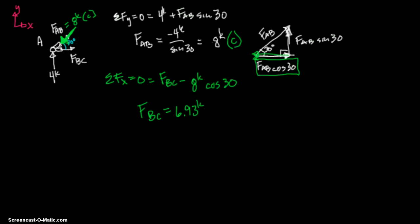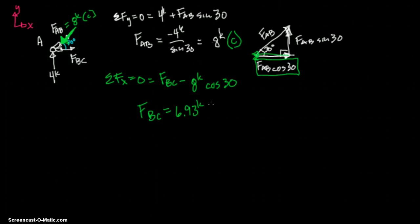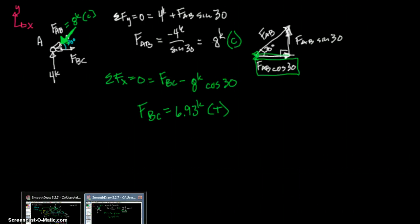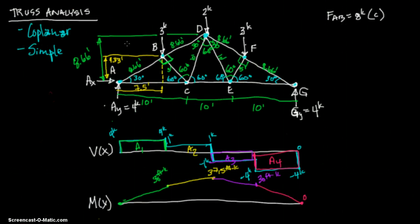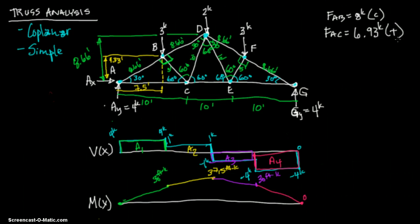And since that's positive, remember that means our assumption is correct. And that means it's tension. So let's go ahead and put it on our other diagram here. So FAC, which is right here, and then it goes to C, FAC equals 6.93 kips. And that's in tension. And now we have the forces around A, both the external forces and the internal forces, are now defined.